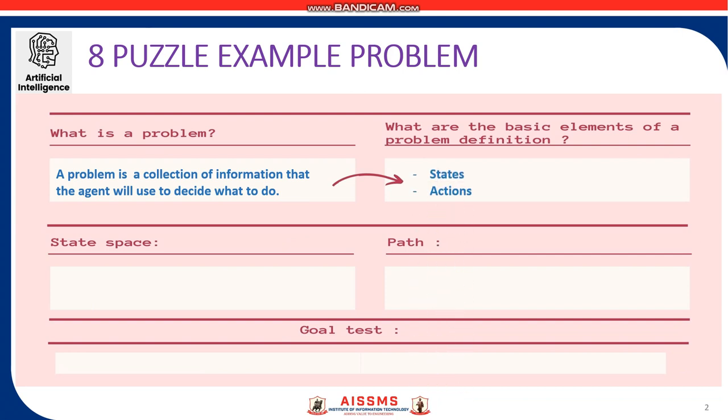The initial state that the agent knows itself to be in and the set of possible actions available to the agent. What do you mean by state space? It is the set of all states reachable from the initial state by any sequence of actions.